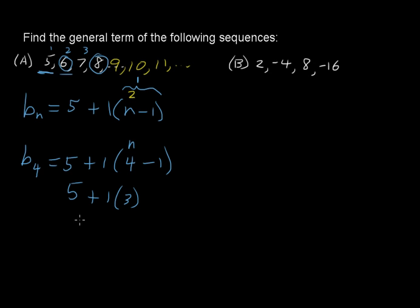This is going to be our general term for the nth term. Now, you could rewrite this, of course, you don't need the 1 multiplier, so you could just say 5 plus n minus 1, and then you could further simplify that because this is just 5 plus n minus 1.